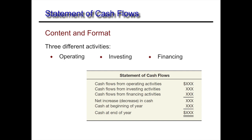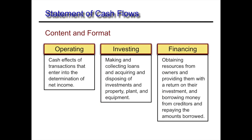Let's look at the operating activity section first. This is where the cash effects of transactions that enter into the determination of income take place. We're mostly interested in the day-to-day activities that created net income. We're going to analyze all of our current assets, all of our current liabilities, our depreciation account, and any gains and losses we may have had throughout the period. By analyze, I mean finding the change — where did it start, where did it end, and the difference between those two numbers is the change.